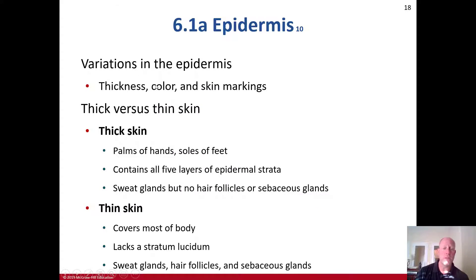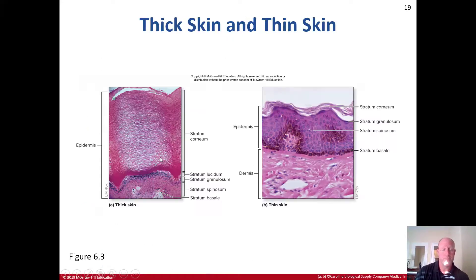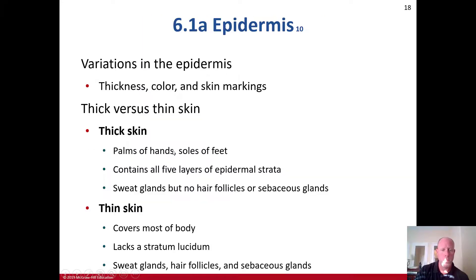The variations of the epidermis include thickness, color, and skin markings. Thick skin versus thin skin: thick skin is found on the palms of the hands and soles of the feet, has all five layers, and sweat glands exist there, but no hair follicles or sebaceous glands — which is why you notice you don't have many hairs coming out of your palms. Thin skin covers most of the rest of the body, lacks a stratum lucidum, and sweat glands, hair follicles, and sebaceous glands are present in thin skin.